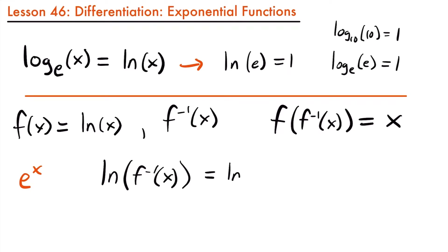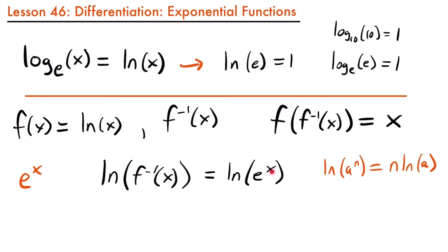Using a property of the natural log — that the natural log of a to the power of n equals n times the natural log of a — we can move the exponent of x to the outside. So we have x times the natural log of e. Since the natural log of e equals 1, this simplifies to x times 1, which is just x.